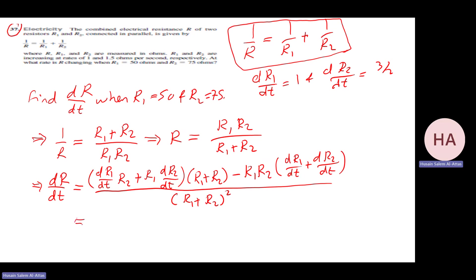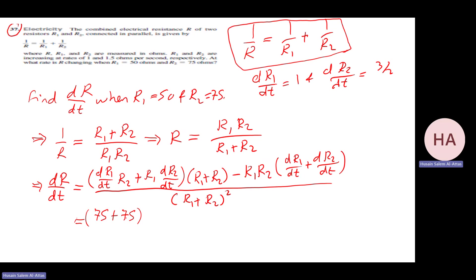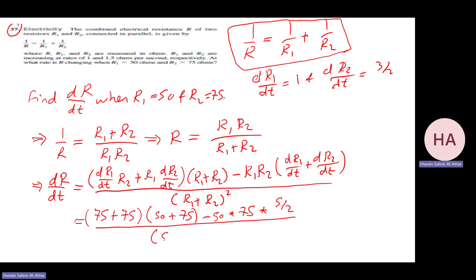Substituting: the numerator has R₂·1 = 75, plus R₁·(3/2) = 50·(3/2) = 75, times (R₁ + R₂) = 125, minus R₁R₂ = 50·75, times (1 + 3/2) = 5/2, over (50 + 75)². The numbers are complicated — just complete the calculation.